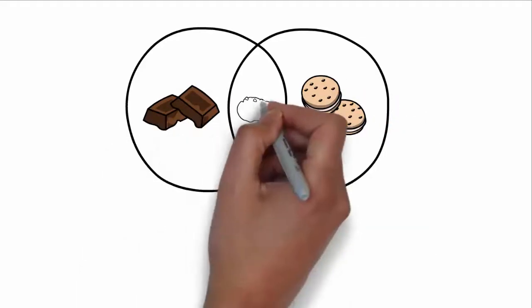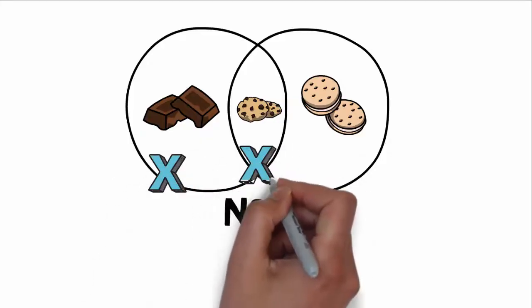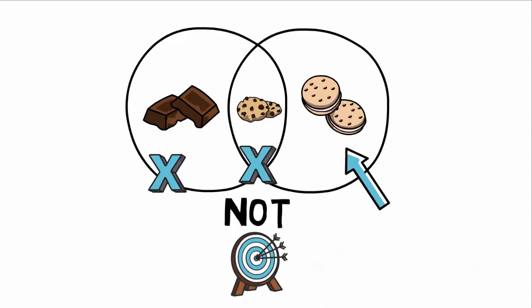You need to use NOT very carefully as it can remove potentially relevant results. This could be a comparison between oatmeal cookies and chocolate cookies, for example.